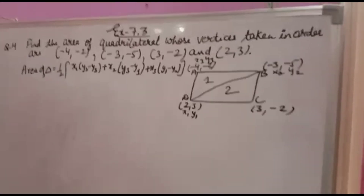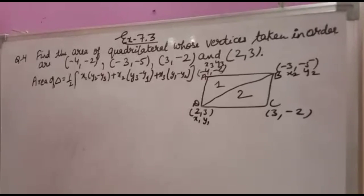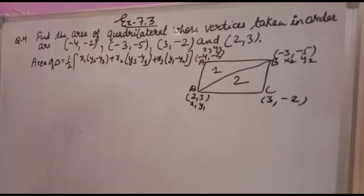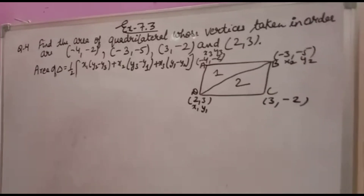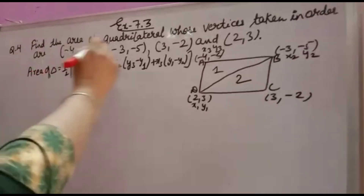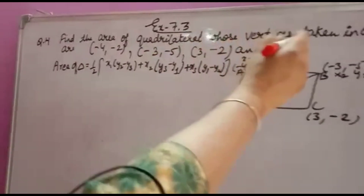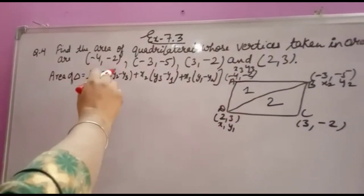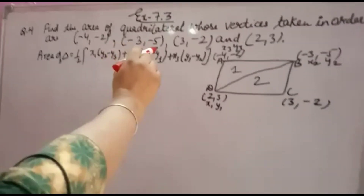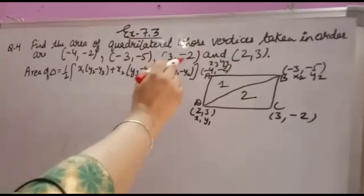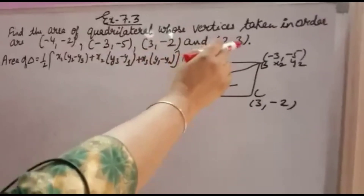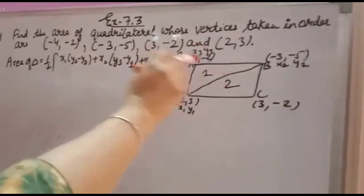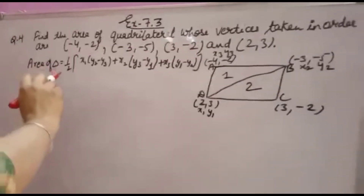Welcome back to your favorite channel, Math Helpers. See question number 4 of Exercise 7.3: find the area of a quadrilateral whose vertices are (-4, -2), (-3, -5), (3, -2), and (2, 3), taken in order.